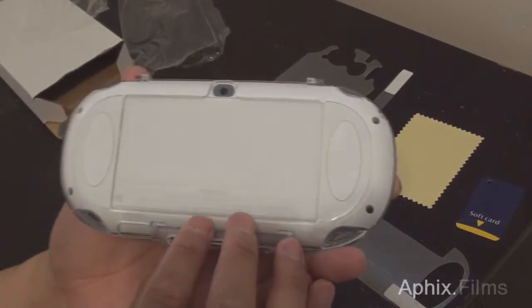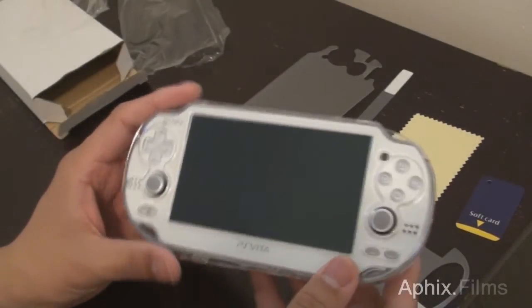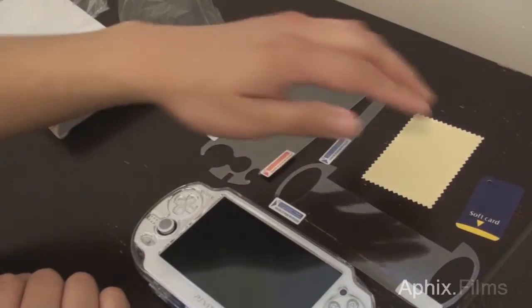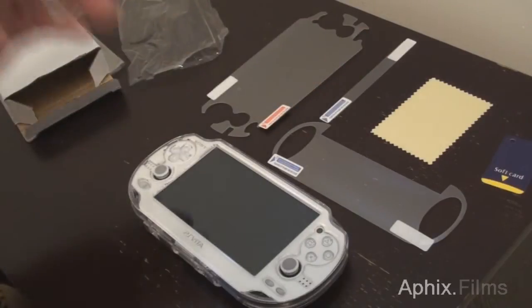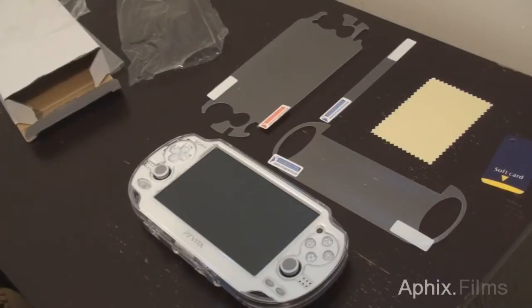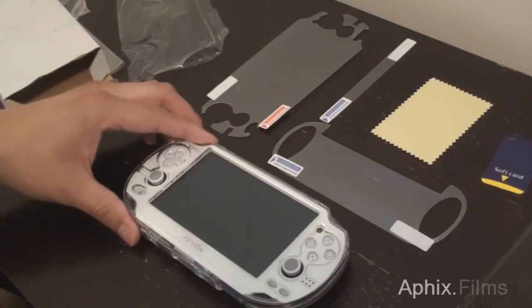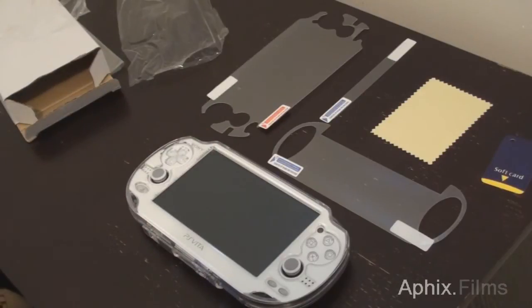So yeah, that's what you get with the clear shell. And like I said, you can find it on eBay for about five bucks and then your shipping is going to be like another five dollars, so you're looking at about a ten dollar investment. But I think it's well worth it if you're looking for a little extra protection for your PlayStation Vita, especially if you got a skin on it.